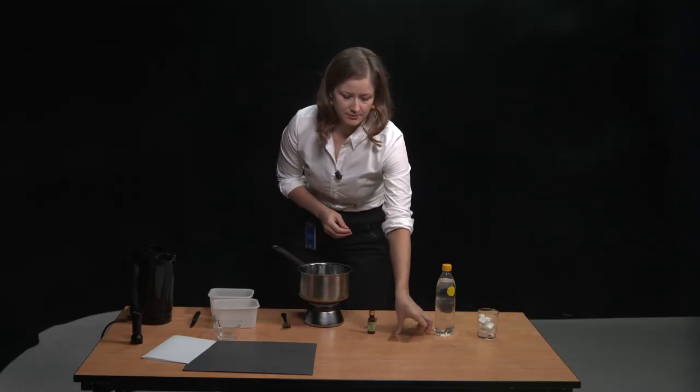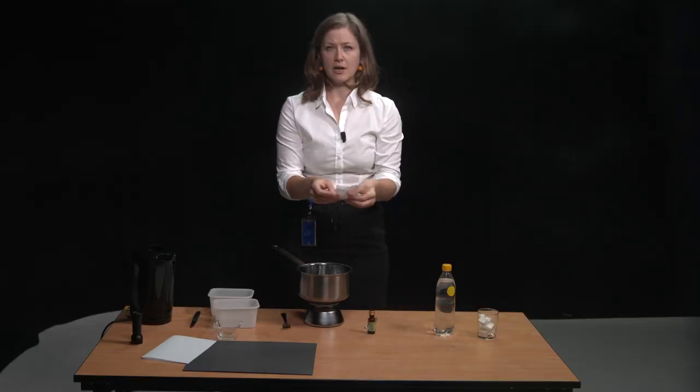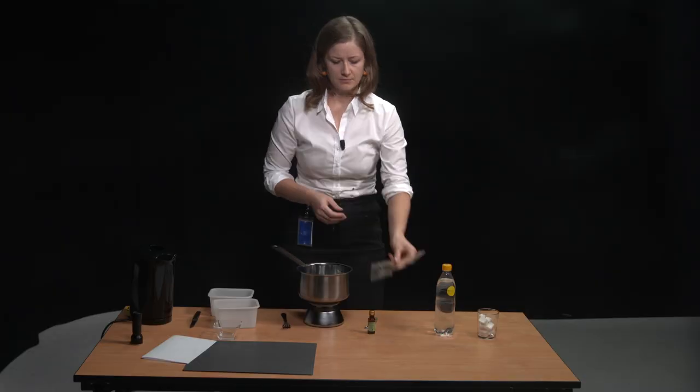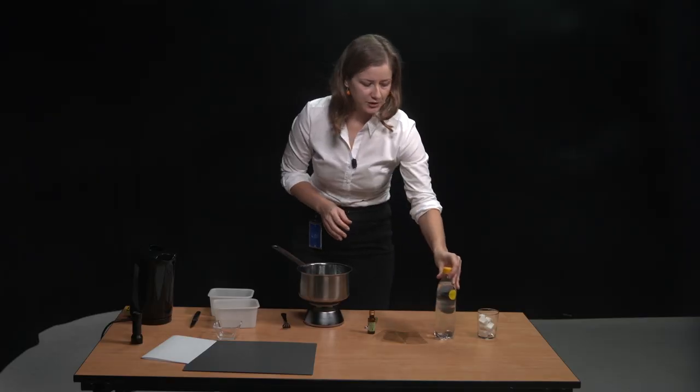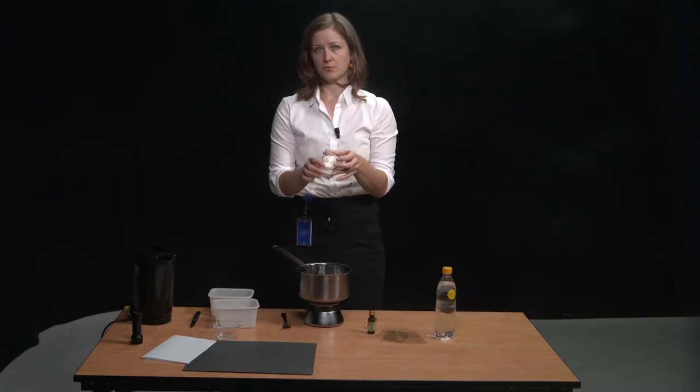In addition we will need gelatin. I use 10 grams, so that's six sheets of gelatin. Then we need tonic water, half a liter, and some sugar, so I have 50 grams of sugar here.